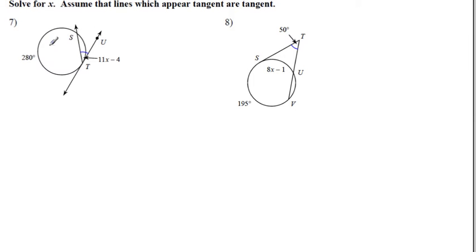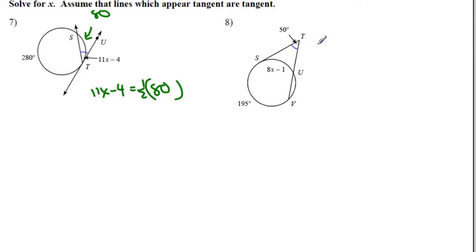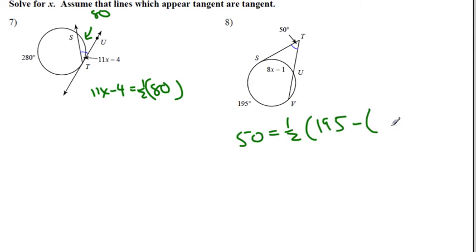For problems 7 and 8: with a secant and a tangent, the angle equals half the intercepted arc. Taking 360° − 280° = 80°, so the angle is 40° (half of 80°). We set 11x − 4 equal to 40 and solve. For the next one, with a tangent and secant from an external point, the angle equals half the difference of the intercepted arcs: 50 = ½(larger arc − smaller arc). Use parentheses for the smaller arc, distribute, and solve with algebra.